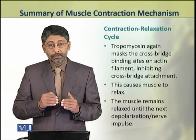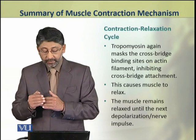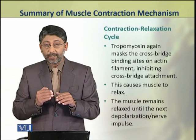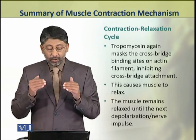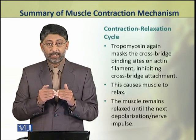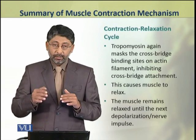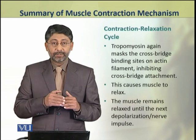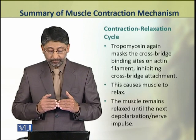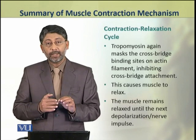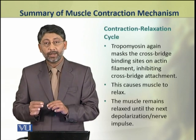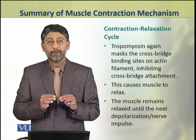Tropomyosin returns to its relaxed position conformation, and as a result, tropomyosin again covers the myosin binding sites present on the actin filament, thus inhibiting cross bridge attachment. When cross bridges are not formed, the muscle is now in a relaxed position. The muscle remains relaxed until the next neuronal input or nerve impulse arrives.